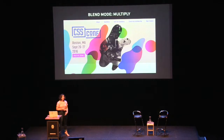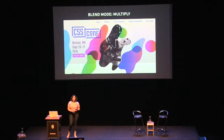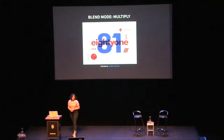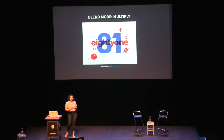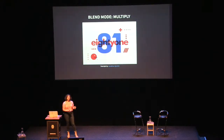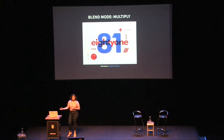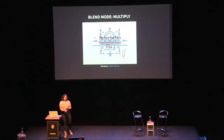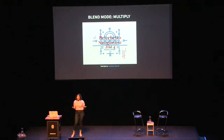Another cool thing about multiply is you can create artistic effects but make them readable to screen readers and search engines. Previously you could not create a visualization like this out of DOM elements or text elements, but now you can. So it's this image saying '81' — this could be a brand name you put on your site as something searchable, readable, and understandable by screen readers as well. These are ideas for bringing more art into the web.